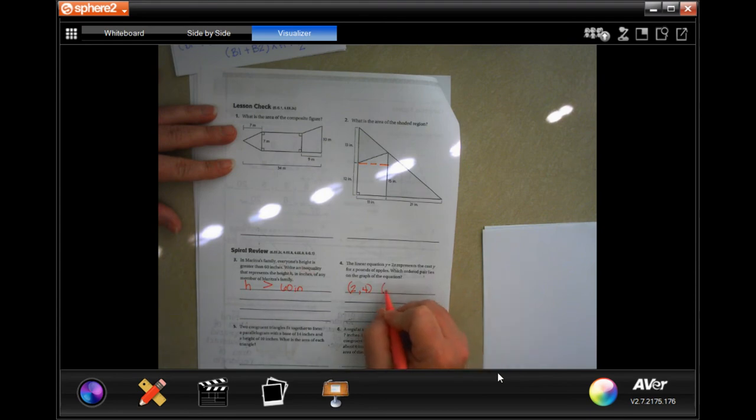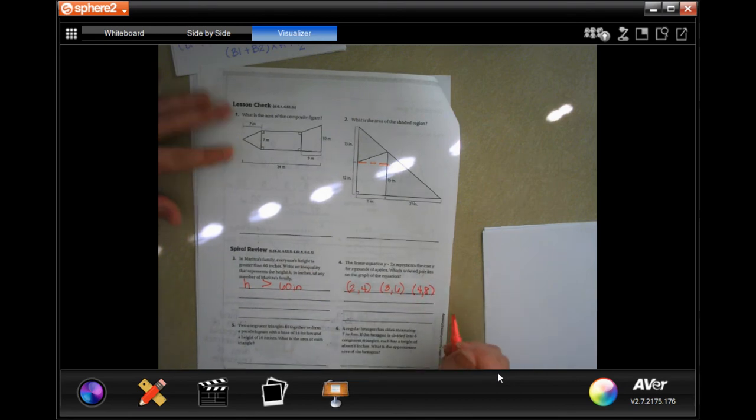If we did 3 pounds, we would times 2 by 3 and get 6. If we did 4 pounds, we would do 4 times 2 and get 8. Anything on there, you don't have to do all three of those, any one of them will do.